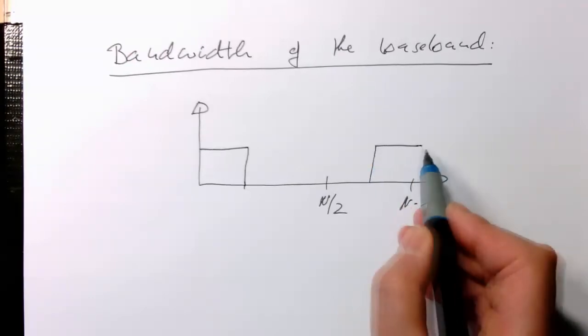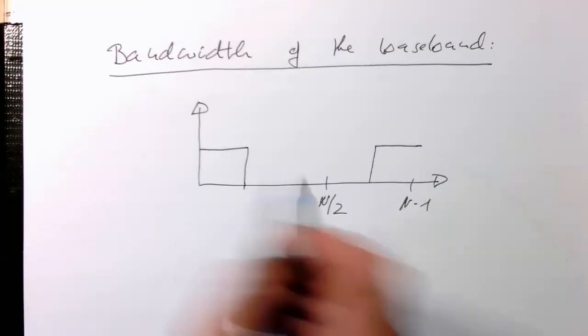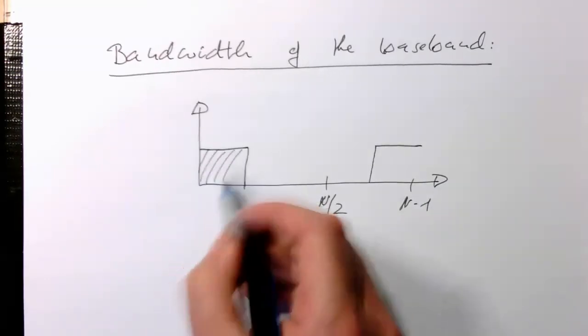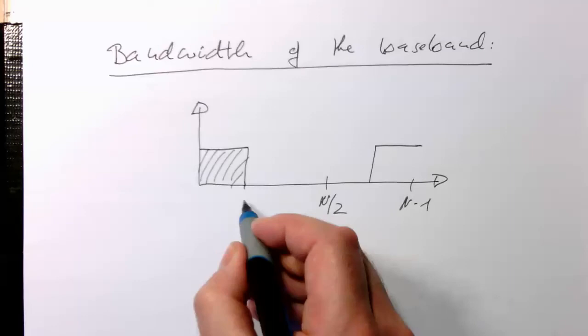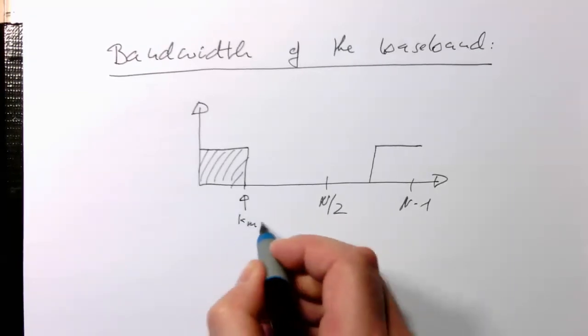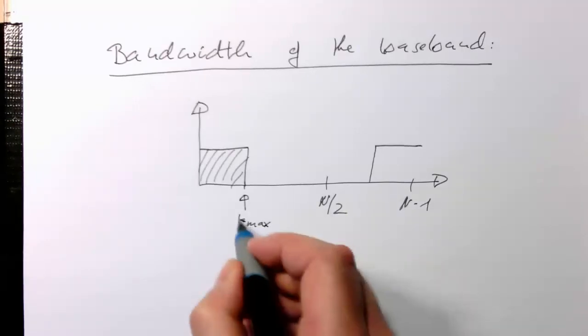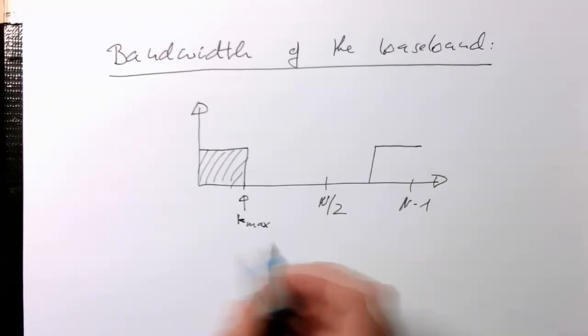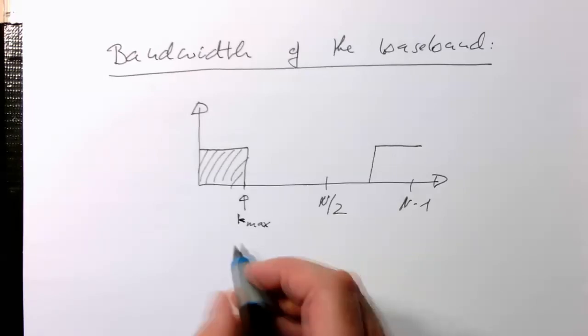Because remember, these are negative frequencies. These are negative frequencies. So this goes up to a certain k_max. And then this k_max creates a certain bandwidth.